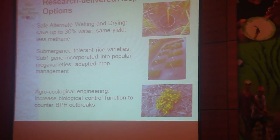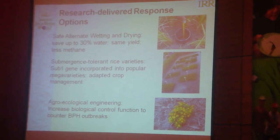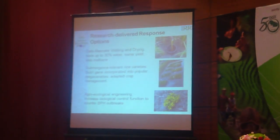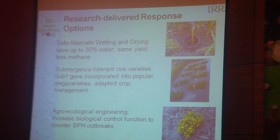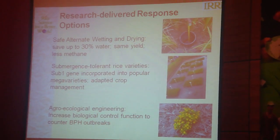We have a whole arsenal of research-delivered response options that we are working on and need to work on in the future, ranging from management technologies — for example, to help cope with irrigation water scarcity — to variety technologies. One very successful example is the discovery of the sub-1 gene that confers tolerance to prolonged flooding in the field. We also have more ecological-based solutions at the landscape level, where we try to modify how the landscape looks to increase its resilience and biocontrol functions.